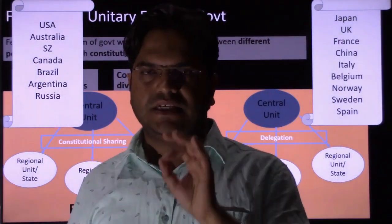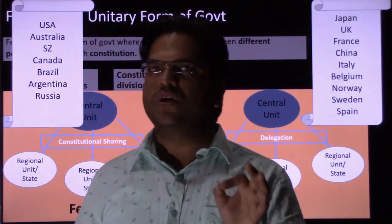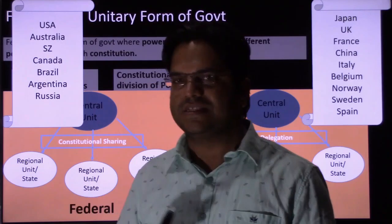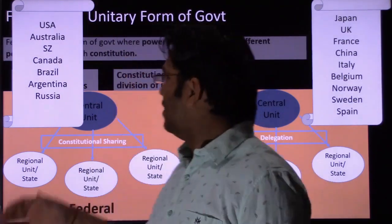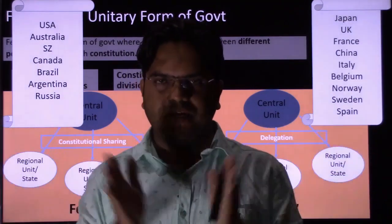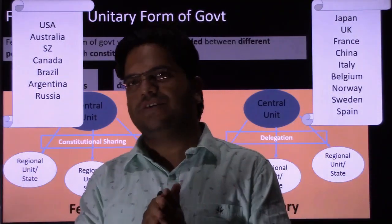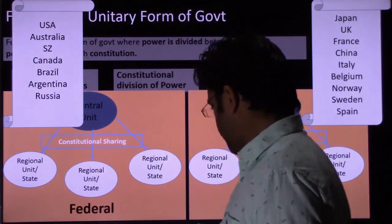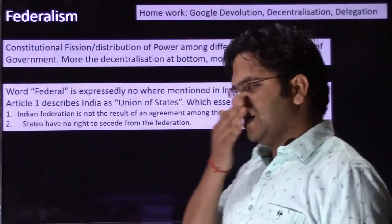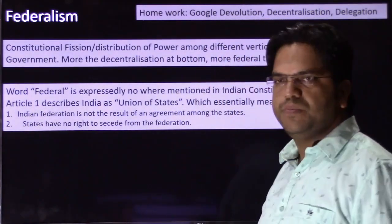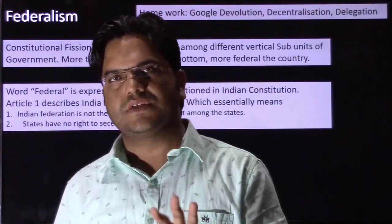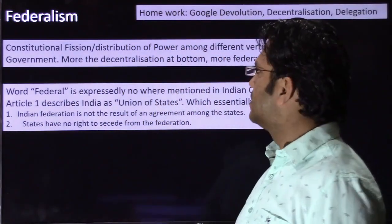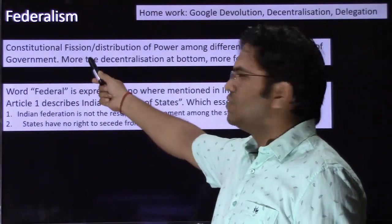On the continuum from federal to unitary, there is another form of government called quasi-federal — a terminology used for the Indian government by K.C. Wheare. It is not fully federal and not fully unitary; it lies in the middle of that continuum. If we have to write the definition of federalism in formal terms, it is called constitutional fission — meaning the constitutional distribution of power among different vertical subunits of the government.